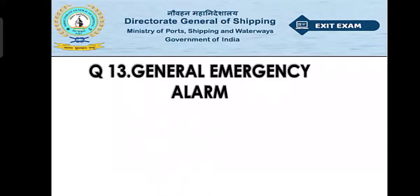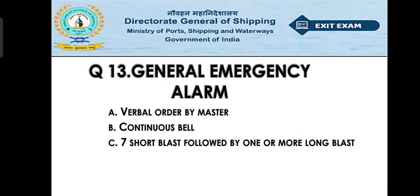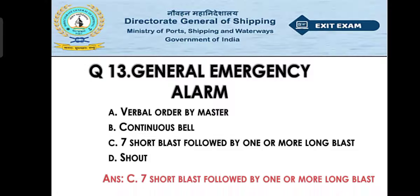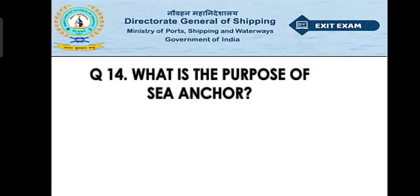Question number thirteen: what is the general emergency alarm? Option A: verbal order by master. Option B: continuous bell. Option C: seven short blasts followed by one long blast. The right answer is option C — seven short blasts followed by one long blast. A continuous ringing bell is the fire alarm, and a shout is associated with man overboard. The general emergency alarm is seven short blasts plus one prolonged blast.